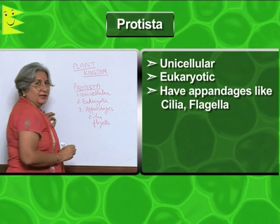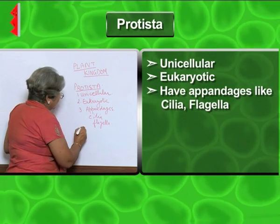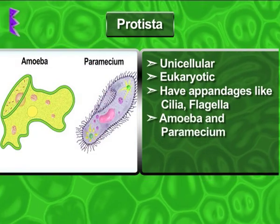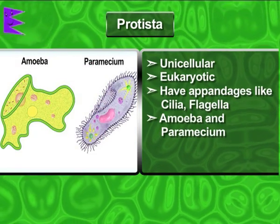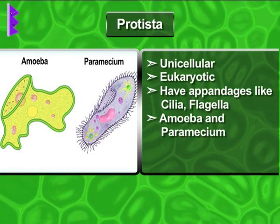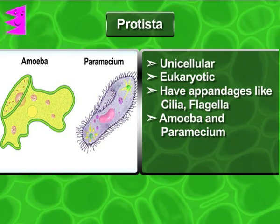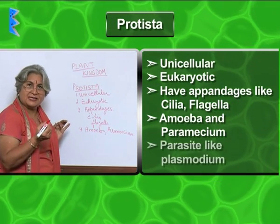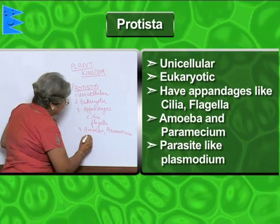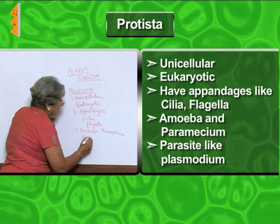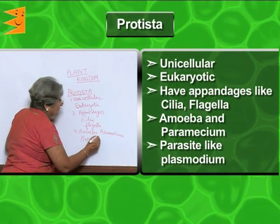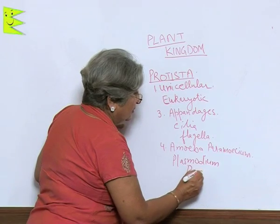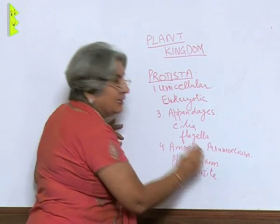The examples of these organisms are amoeba and paramecium. They are free-living, but some are parasites also — like plasmodium is a parasite and it causes malaria.